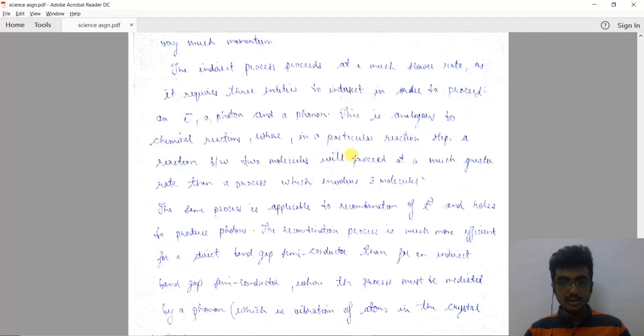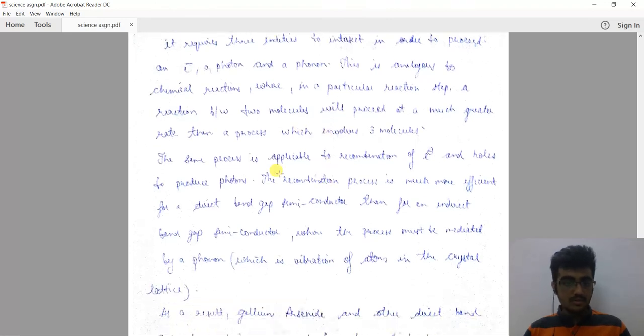A reaction between two molecules will proceed at a much greater rate than a process which involves three molecules. The same process is applicable to recombination of electrons and holes to produce photons.